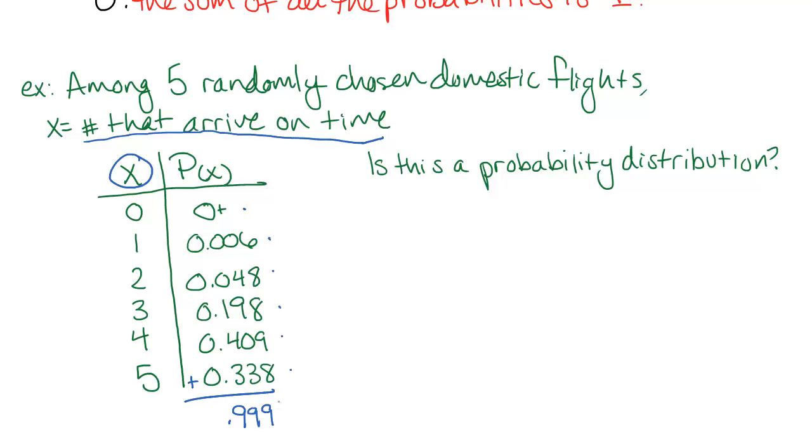Now if you add these up on your calculator, you'll see that it actually comes out to .999. This is just because these probabilities are rounded. You'll notice the little zero with the plus. This means that this is actually bigger than zero, but because we're rounding to three decimal places, the number is too small to see here. So if you get something like this, this is okay. We can treat this as being a sum of one. So this meets all three criteria, which means that it is a probability distribution.